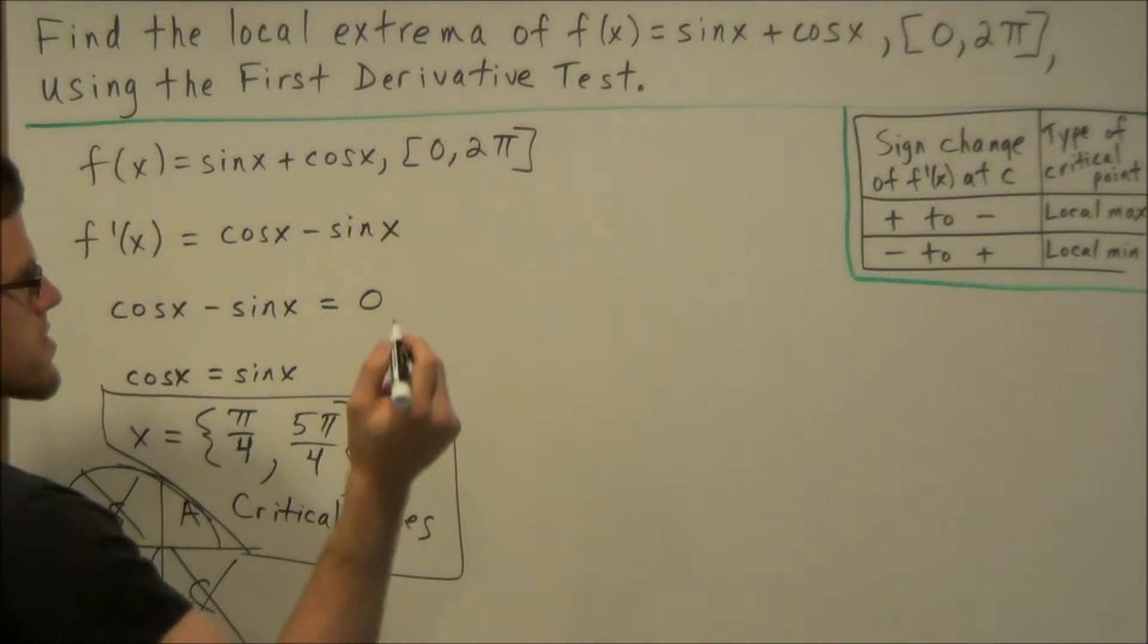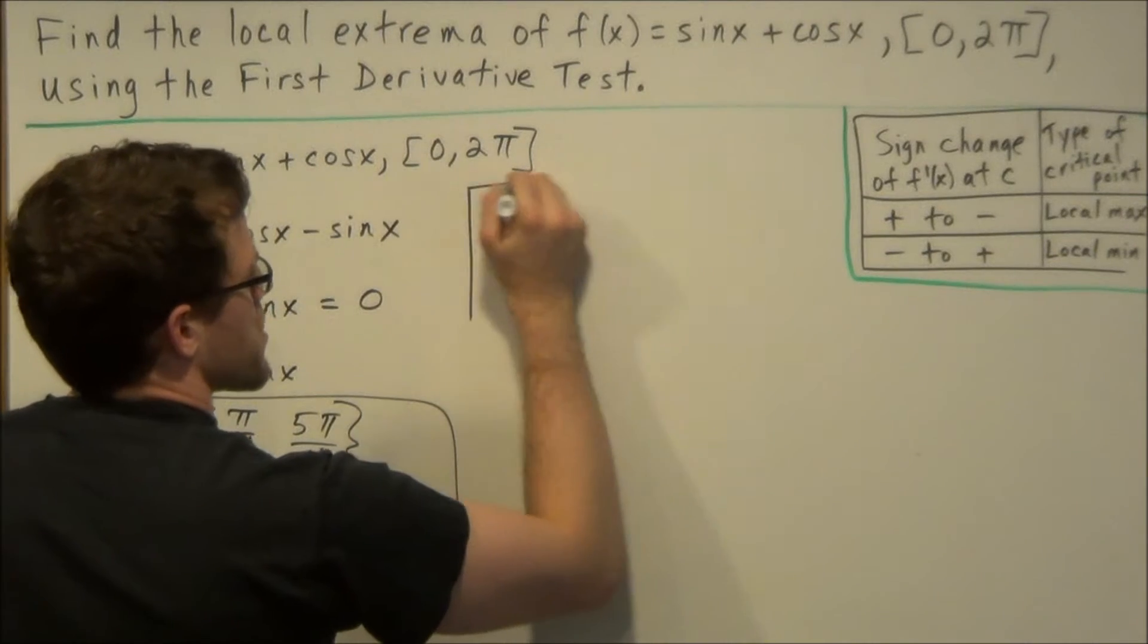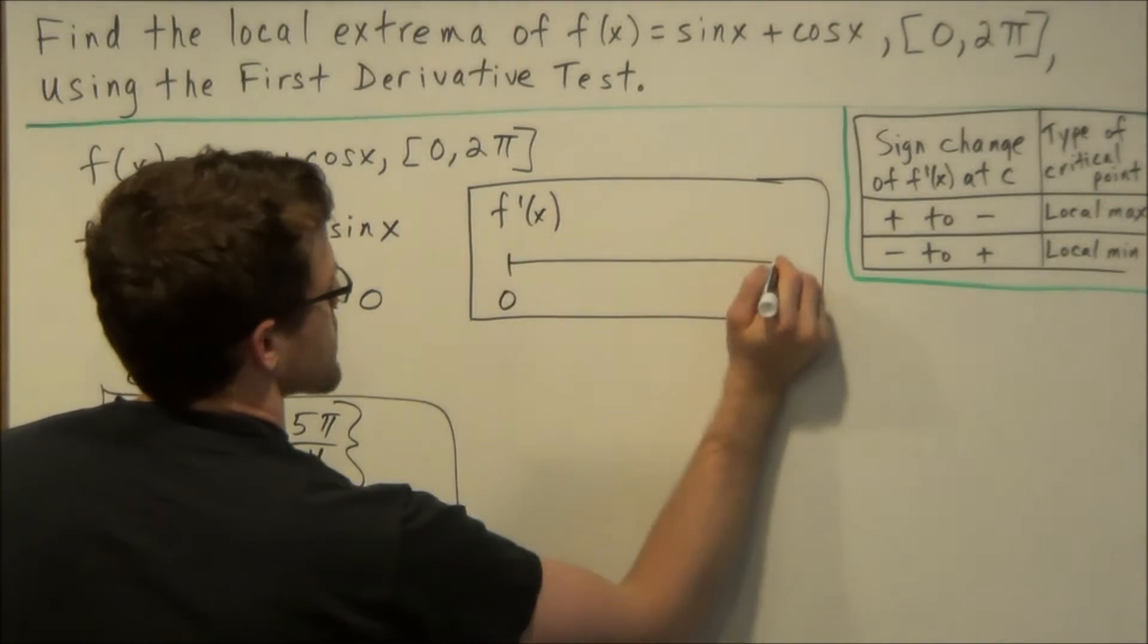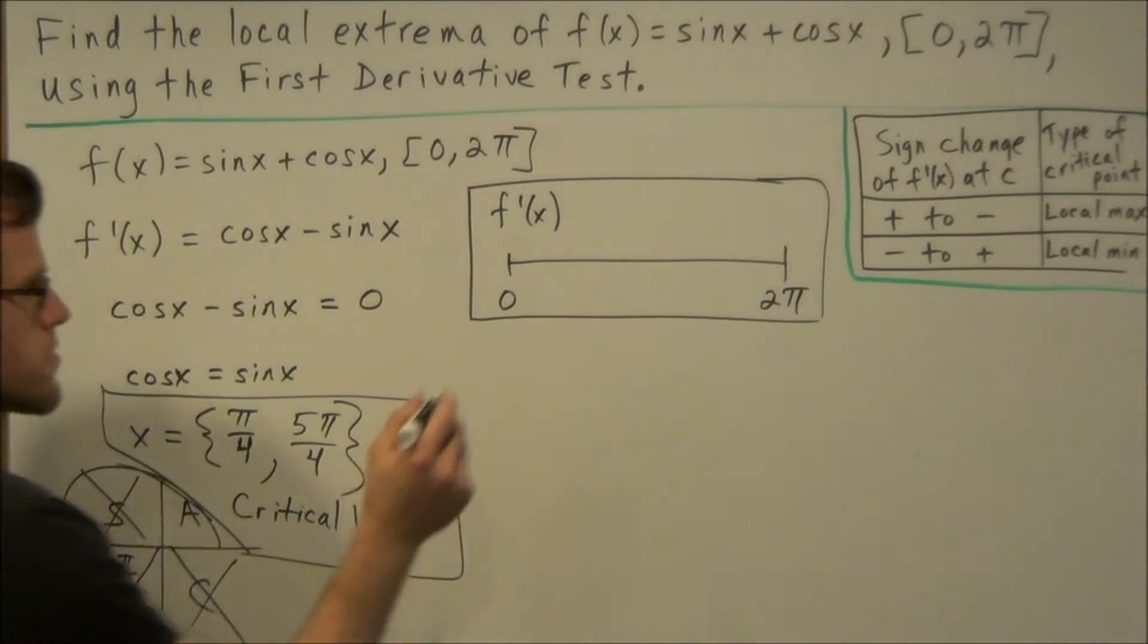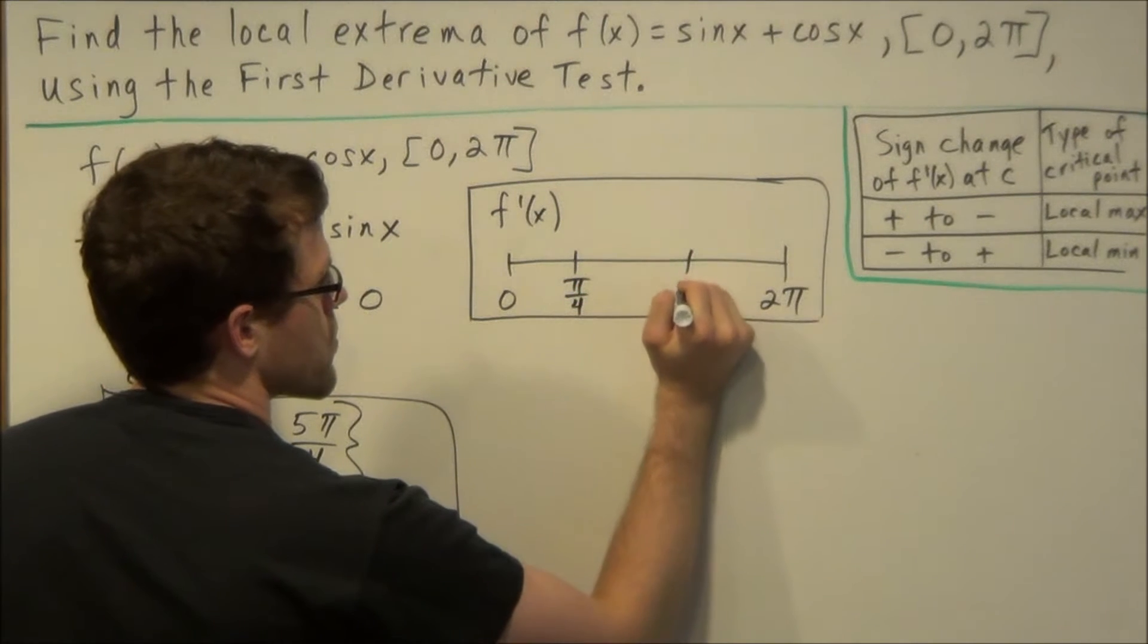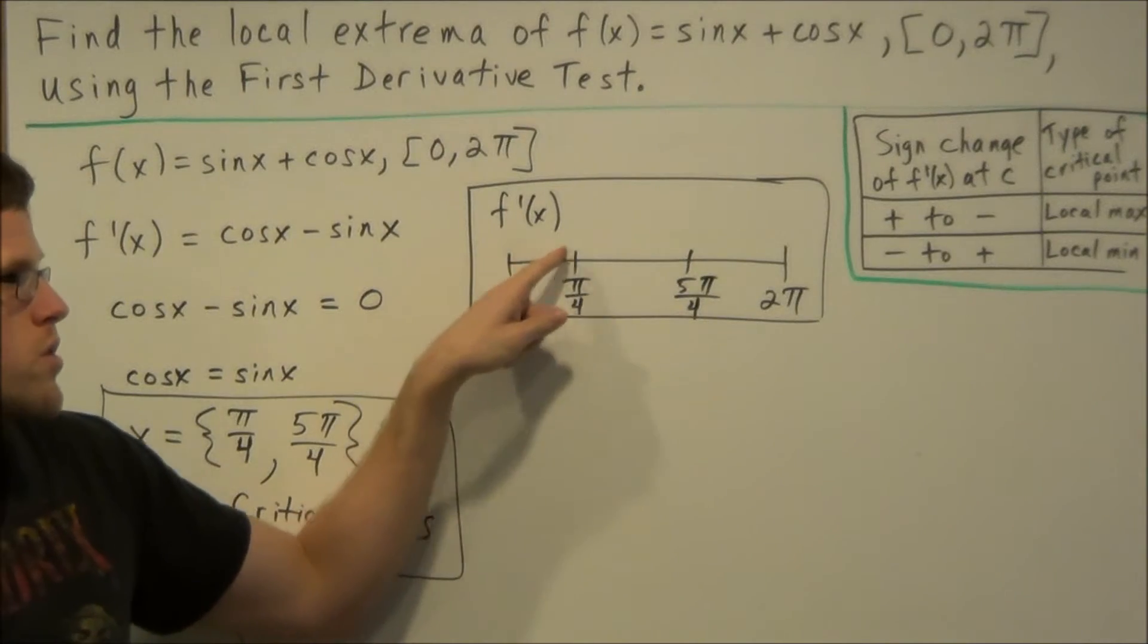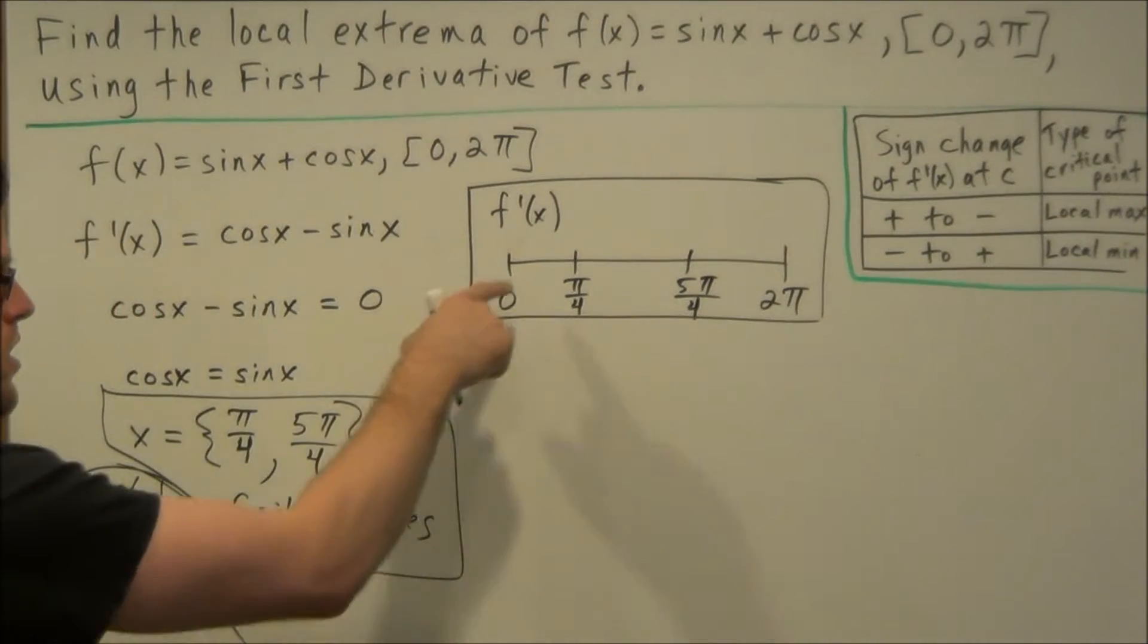And the way we do that is we're going to make a sign chart for f'(x). So we're going to start by making a number line. And it's going to start at 0, and it's going to end at 2π because this is the interval we were given for this problem here. And now the critical values are π/4 and 5π/4. So when we cut this interval from 0 to 2π using these two critical values, we have to check 1, 2, 3 subintervals to determine if they're positive or negative.